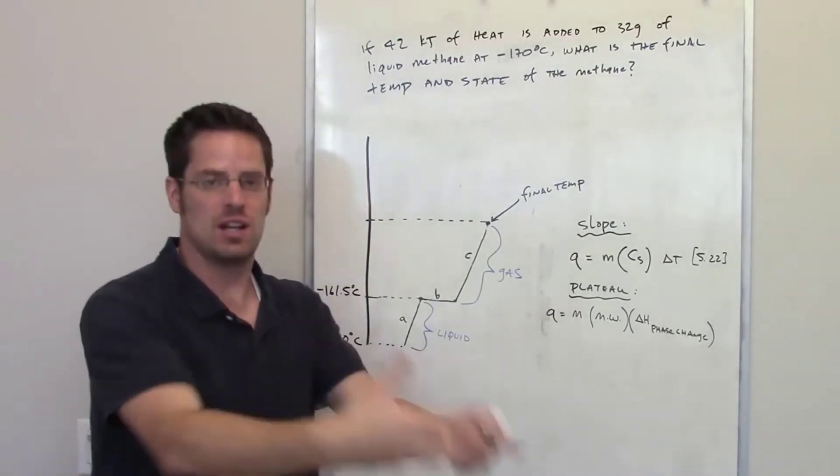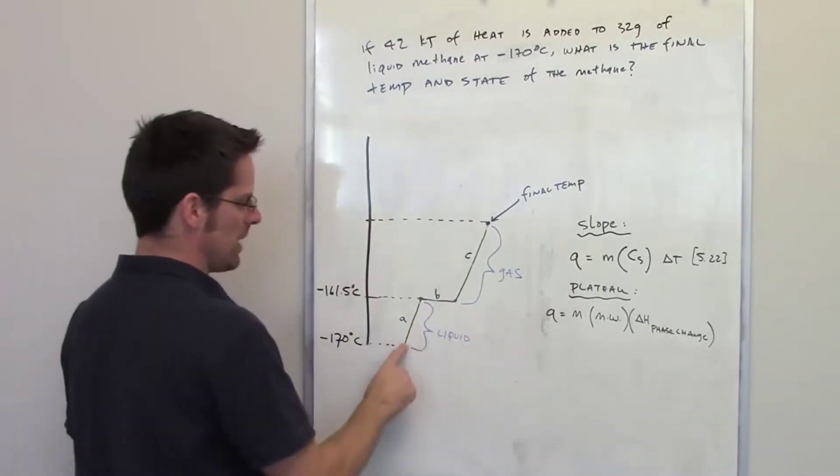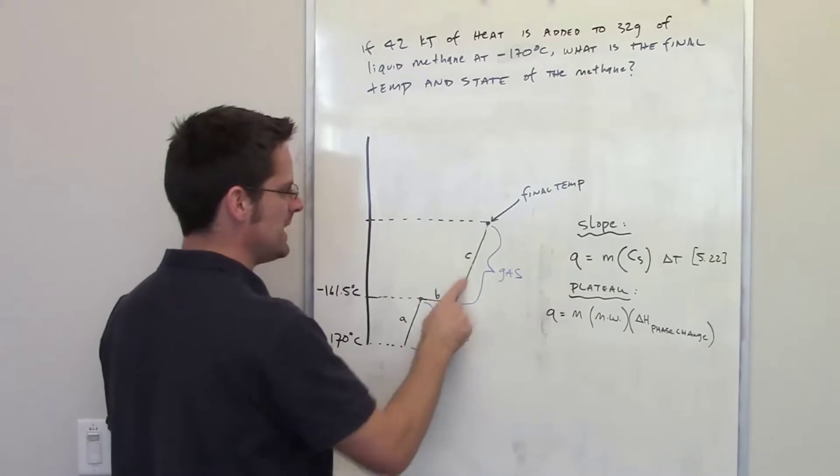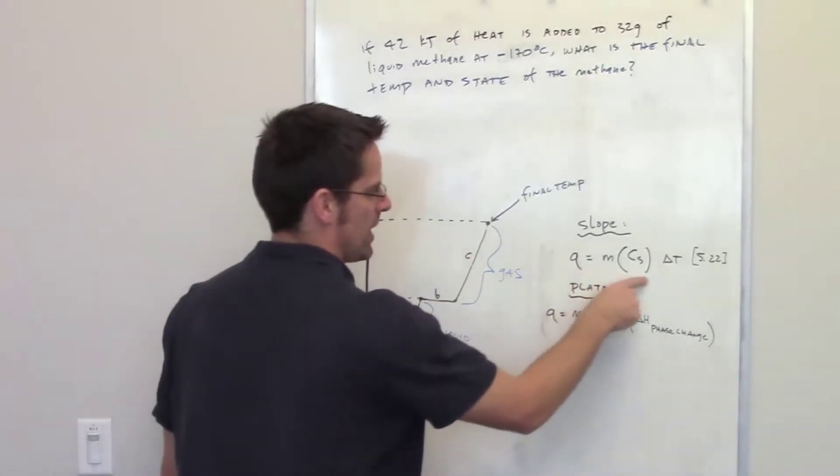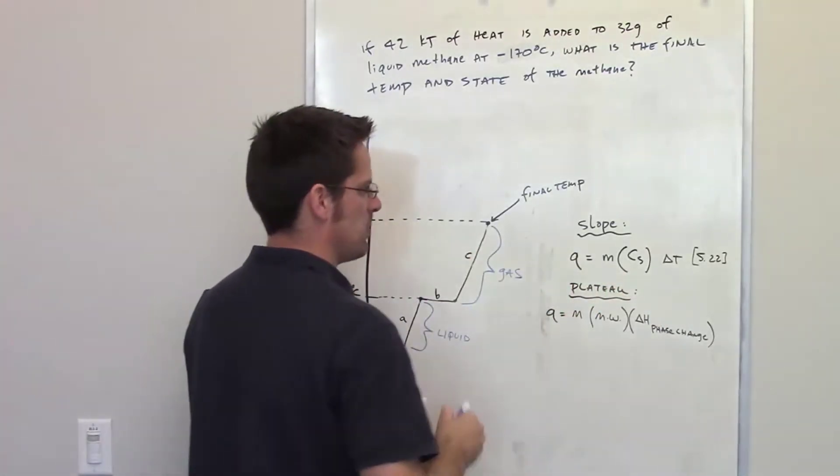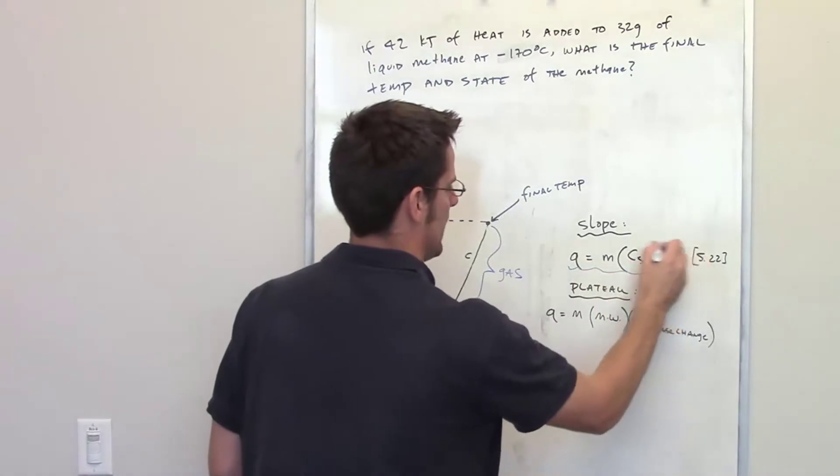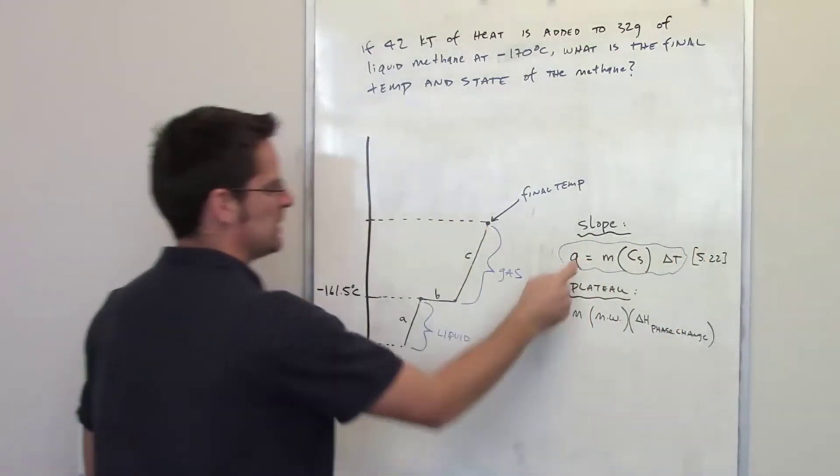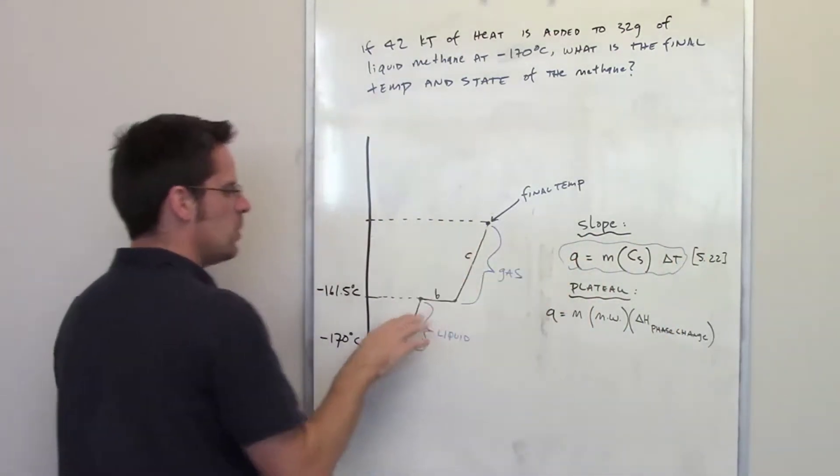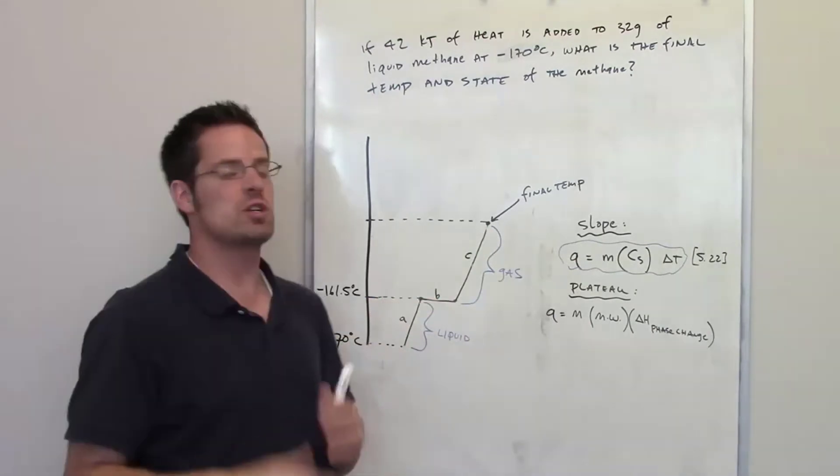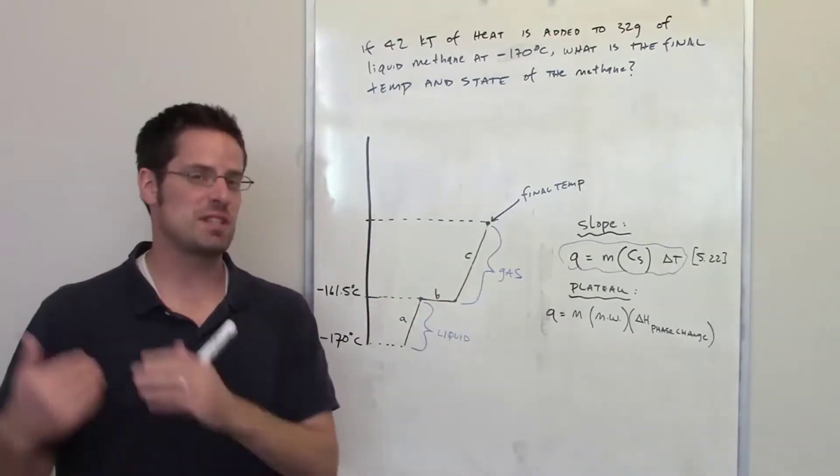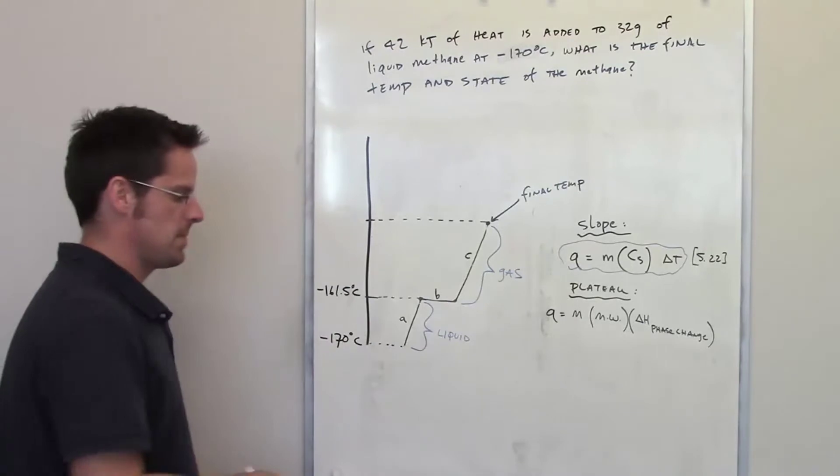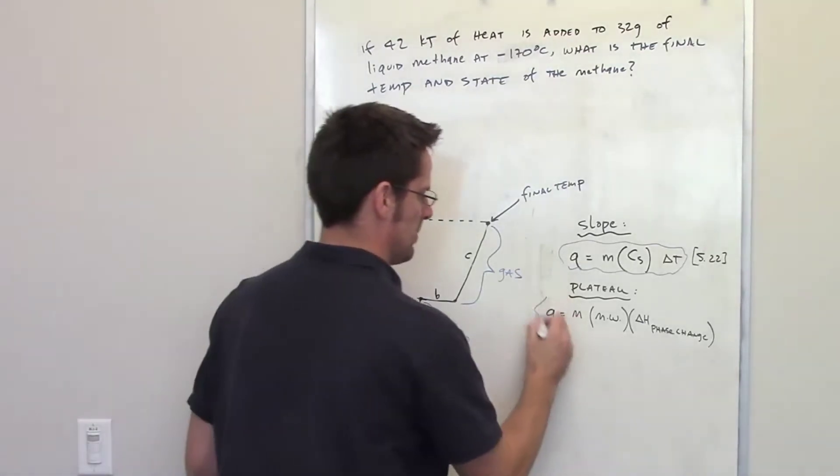As I've stated elsewhere, and I'll link to it here, whenever you're going up one of these slopes on a heat curve, you use this equation, which happens to be equation 5.22 from our text. That tells us how much heat is required to go up a slope. Whenever you're traversing one of these plateaus, which represents a phase change - that is the change from a solid to a liquid or a liquid to a gas - you use this equation, the plateau equation.